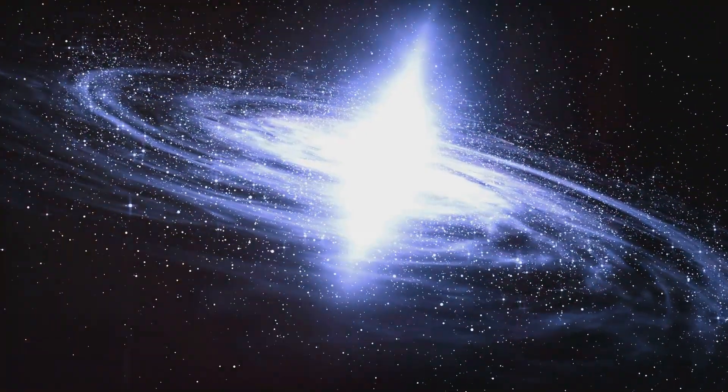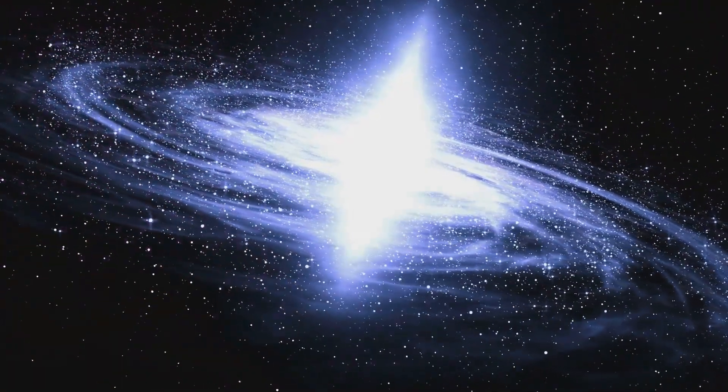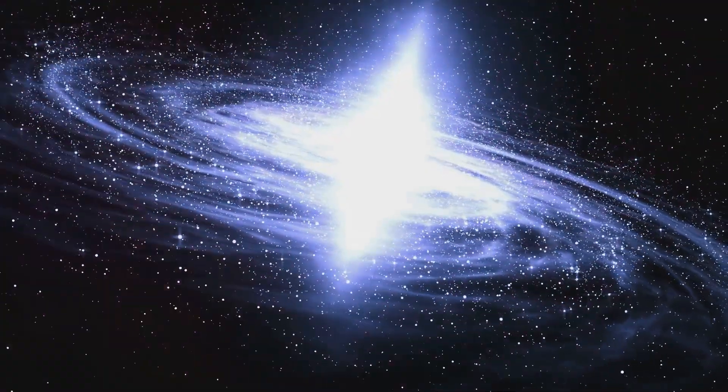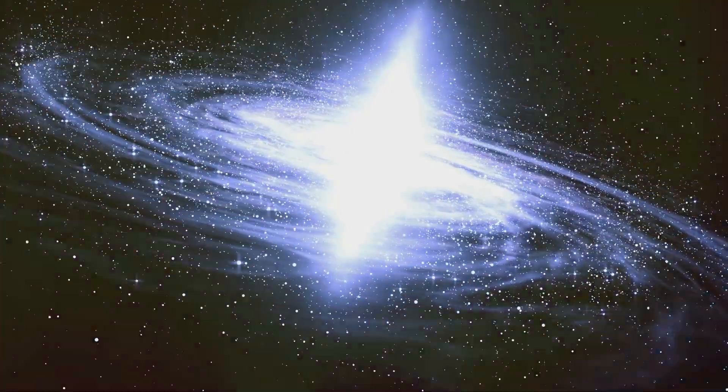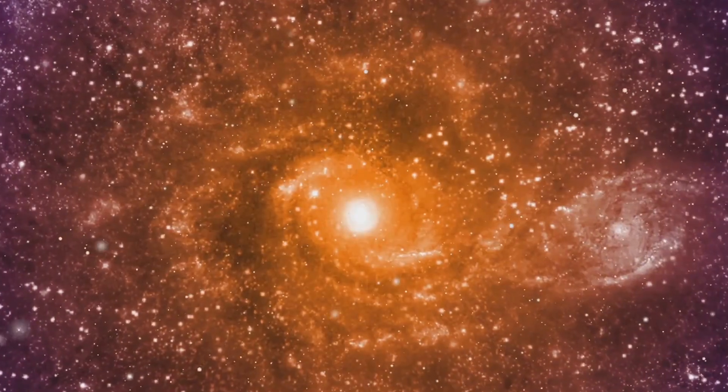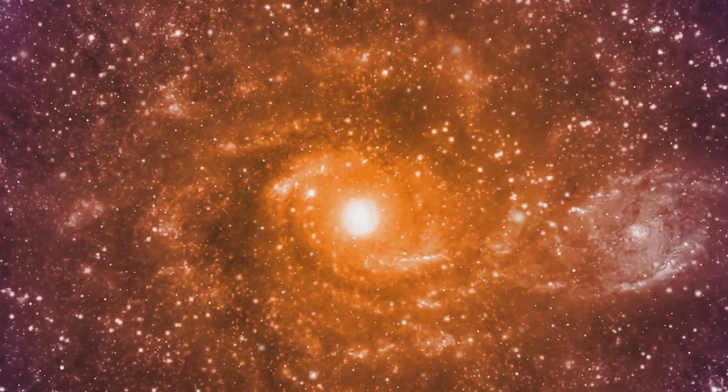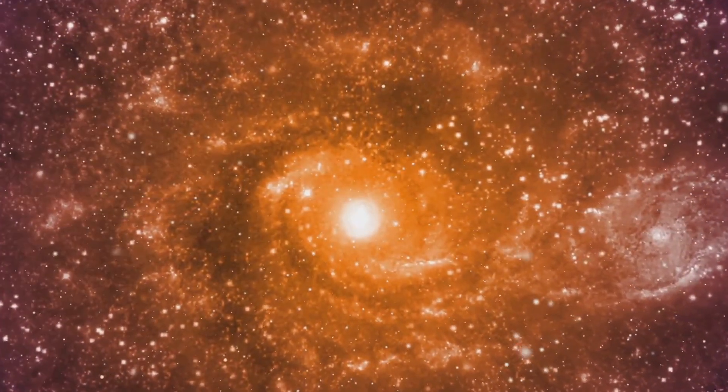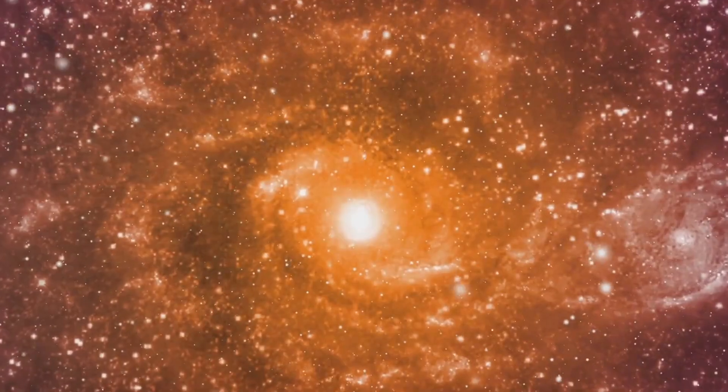Over millennia, the Milky Way's spiral structure might evolve. The gravitational interplay between stars would continue to reshape the galaxy, leading to a possible transition from a spiral to a more irregular structure. Interestingly, the absence of Sagittarius A could lead to new black hole formation, as massive stars evolve and explode in supernovae.